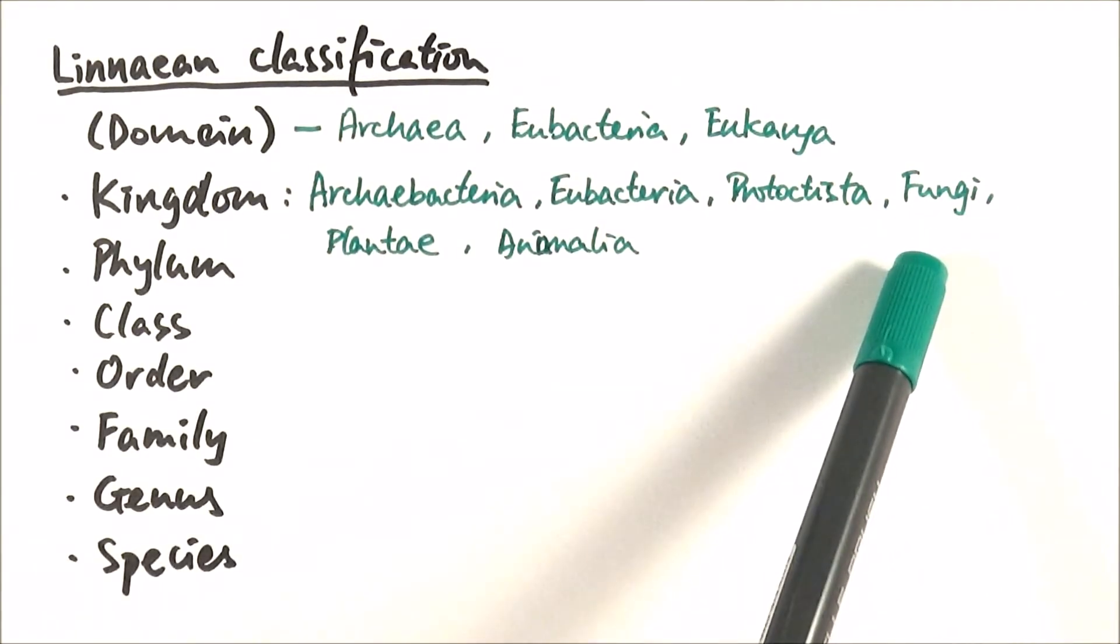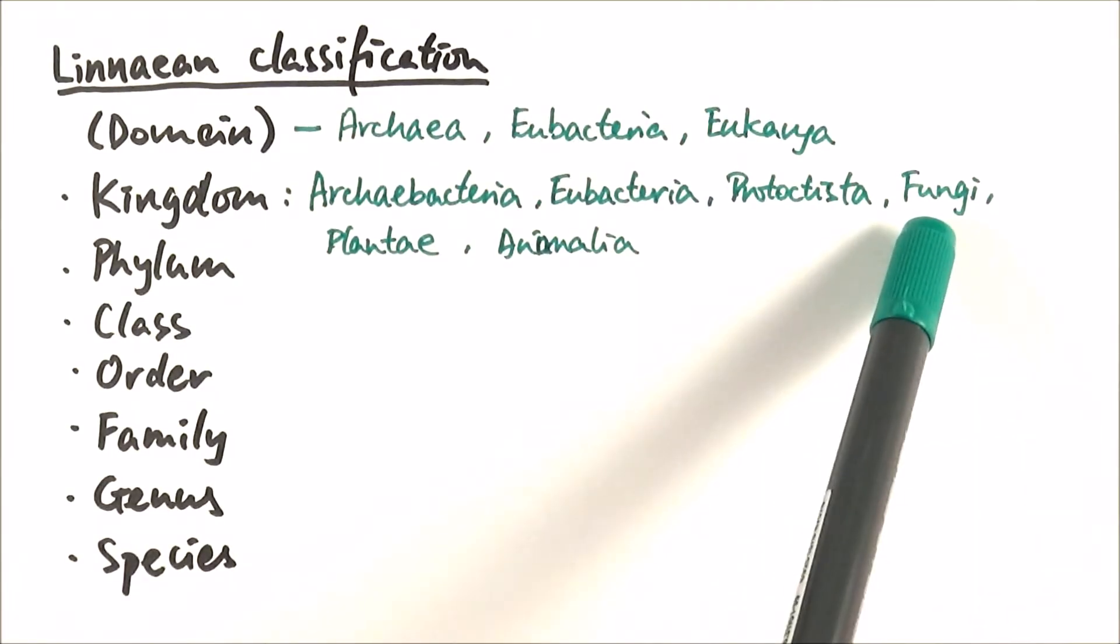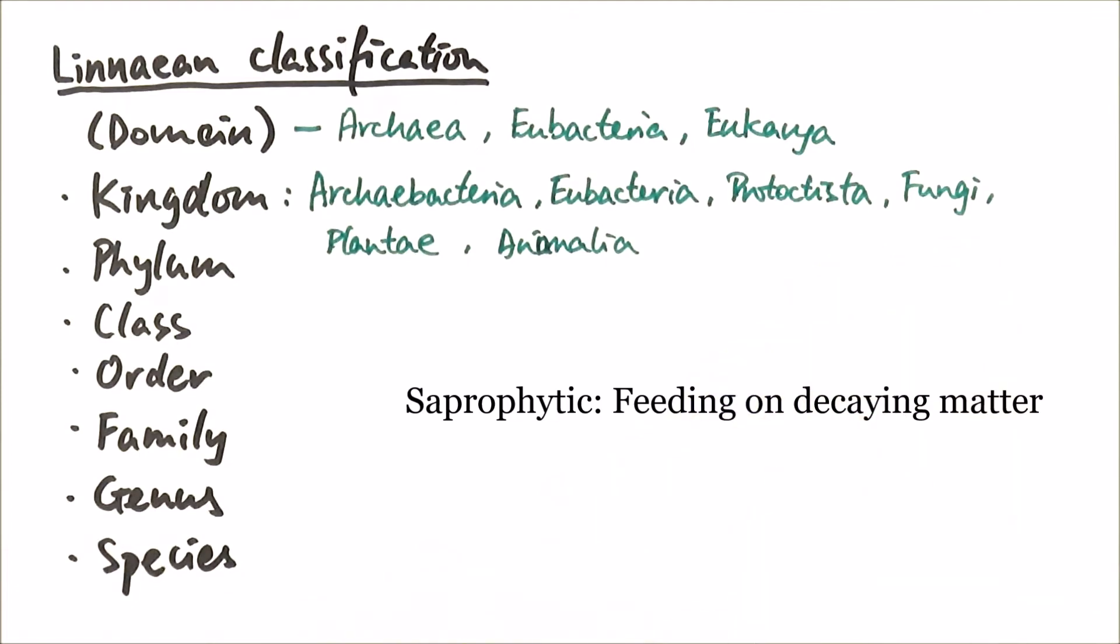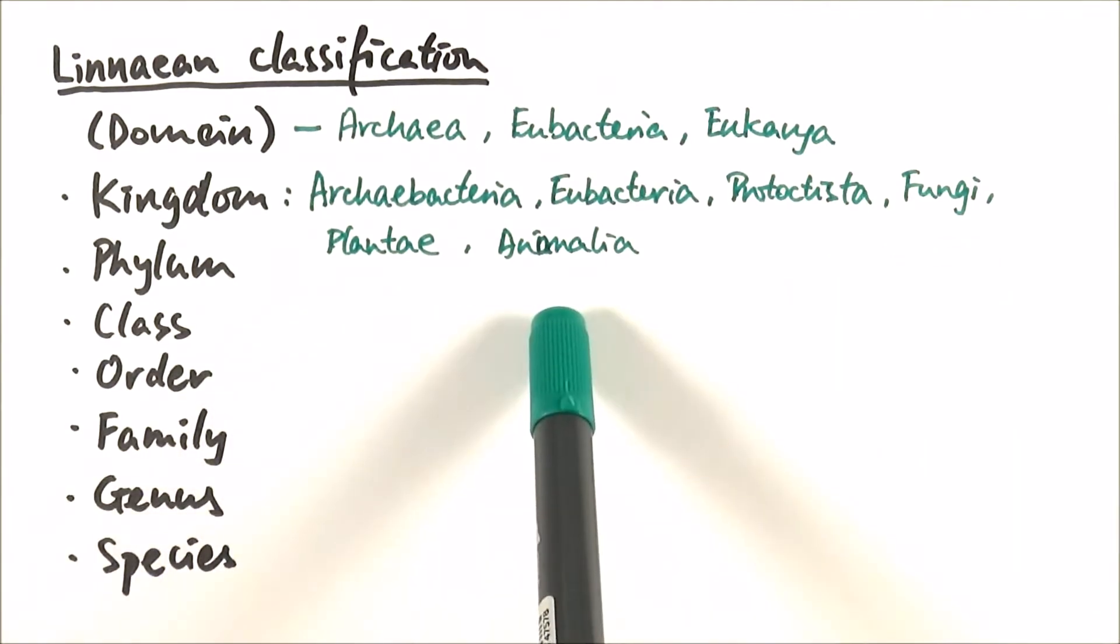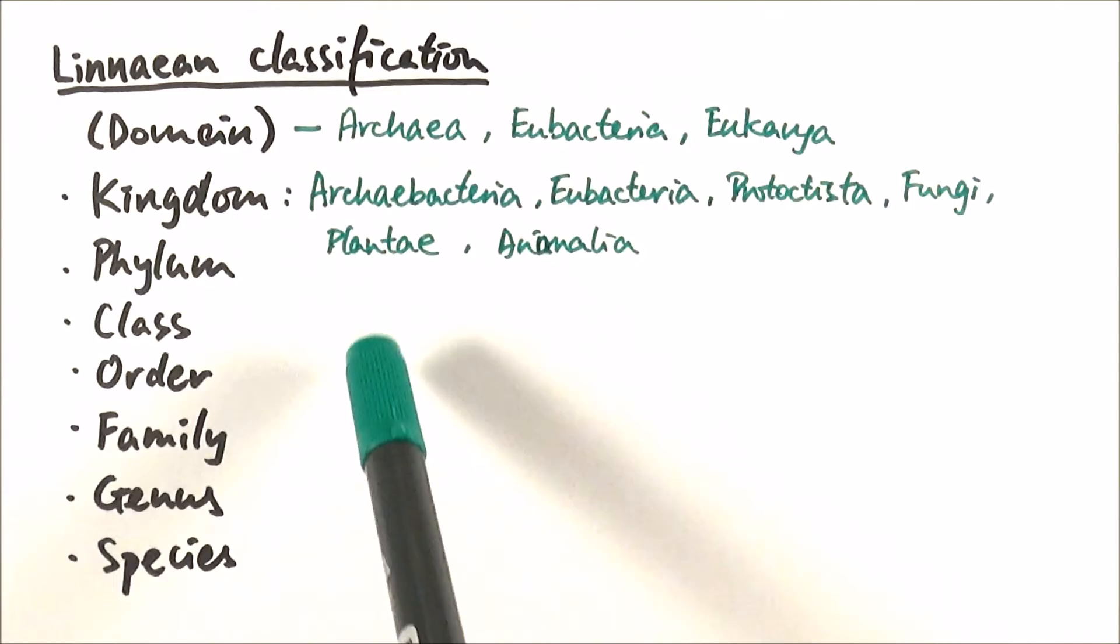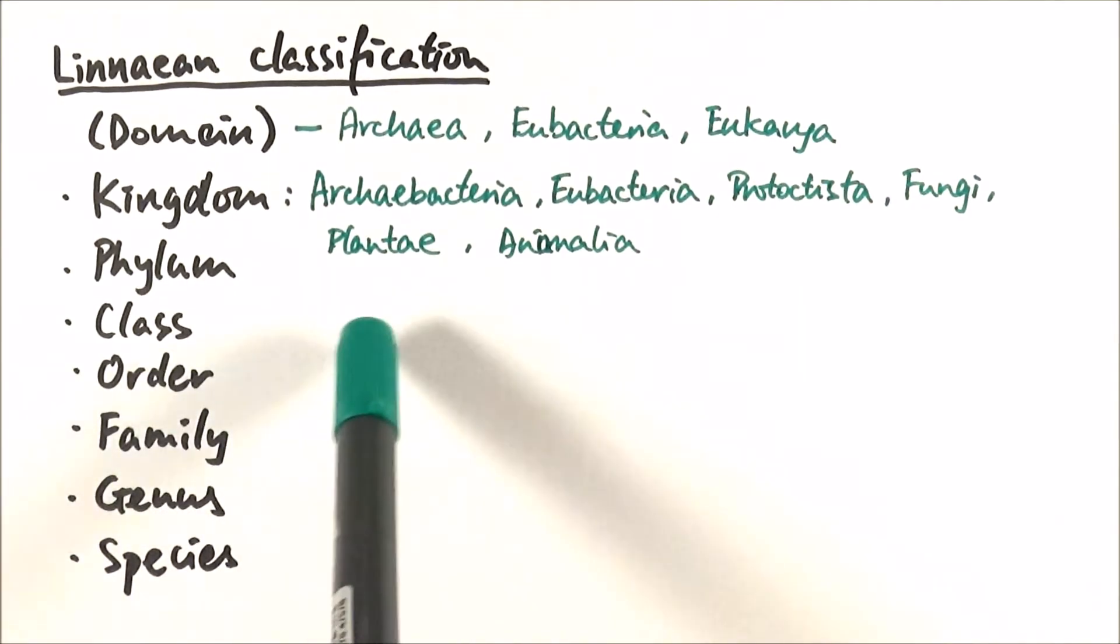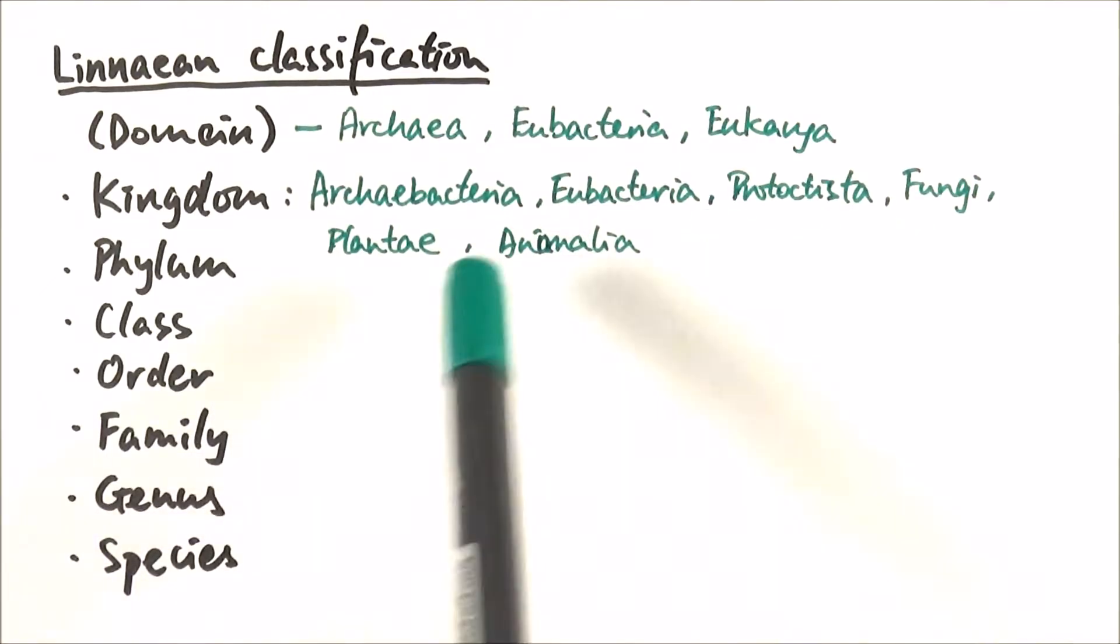As for fungi, an obvious example would be mushrooms, multicellular organisms with the nucleus, and interestingly a lot of them are saprophytic, meaning they feed on decaying material. Plantae and Animalia as the name you would probably guess - Plantae referring to plants and Animalia referring to animals.